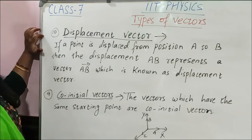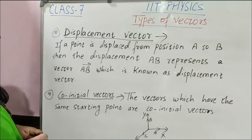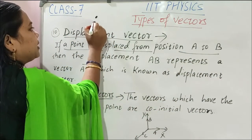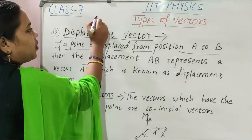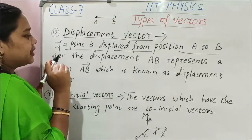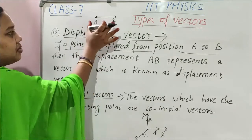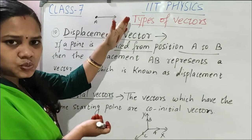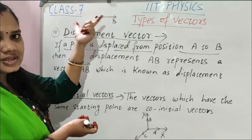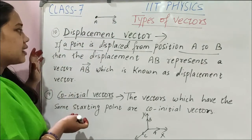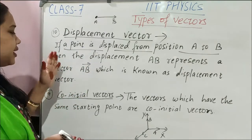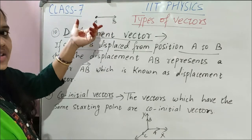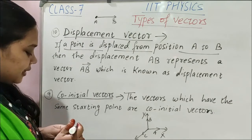Next is displacement vector. If a point is displaced from position A to B — suppose one point's position is A, and the point is displaced from A to B — then the displacement AB represents vector AB. This vector is known as displacement vector. So if any point is displaced from one position to another position, from point A to point B, then the displacement is called a displacement vector.